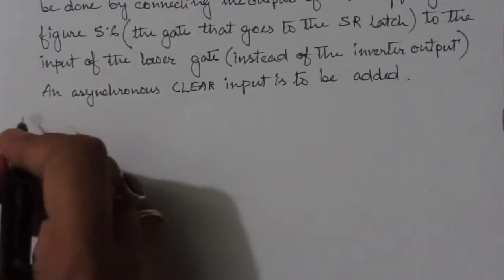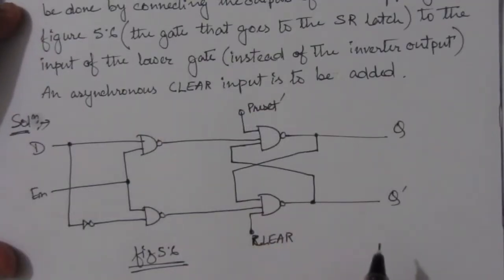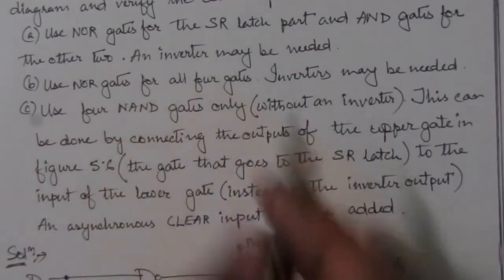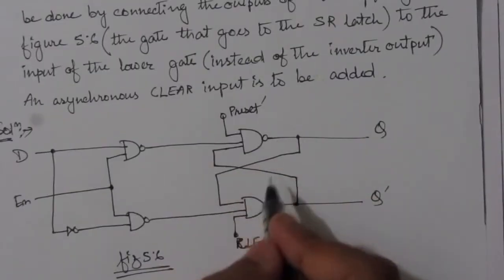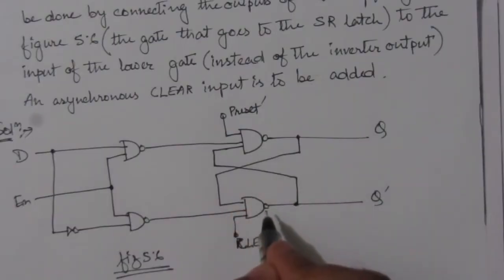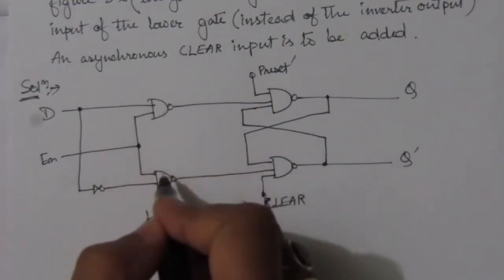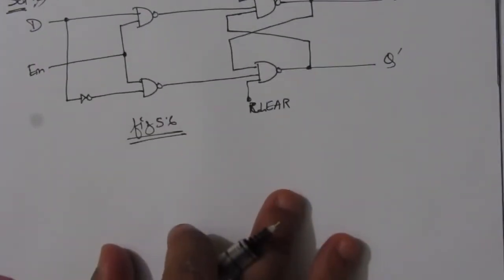Let me first draw figure 5.6 from inside the chapter. In the first case, we have to use NOR gates for the SR latch part — this is the SR latch part. So here we have to use NOR gates instead of NAND gates, and for the other two gates we have to use AND gates.